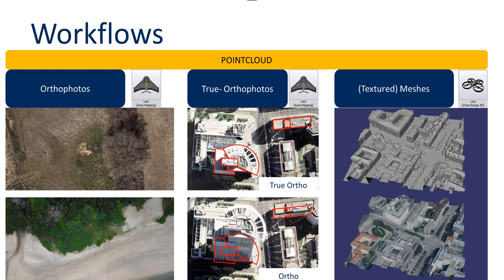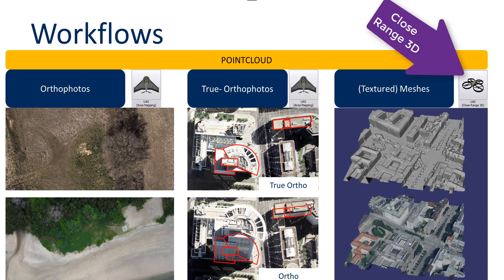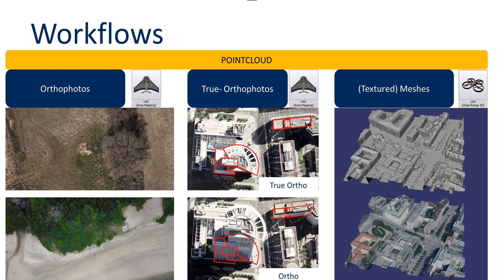The third workflow we want to show is the close range 3D project type, where we will extract a point cloud and a mesh or a textured mesh, which is a typical result for close range projects.